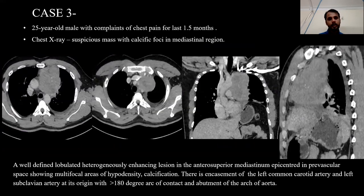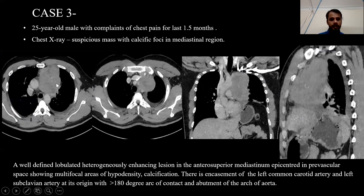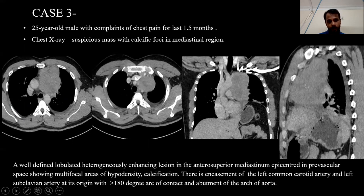Case 3 is a 25-year-old male with complaints of chest pain for the last one and a half months. Chest X-ray showed a suspicious mass with calcific foci in the mediastinal region. CT chest axial, coronal, and sagittal images show the mass is minimally enhancing. This is a large mass involving the middle mediastinum with obliteration of fat planes, having calcific foci and hypodense areas within, encasing the subclavian arteries, with loss of fat planes with the aorta, and having mass effect on adjacent cardiomediastinal structures displacing the great vessels and the heart. This is a case of immature teratoma.